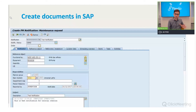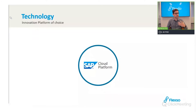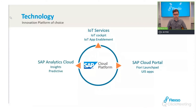We evaluated whether to build this ourselves or use SAP Cloud Platform, and SAP Cloud Platform won out. We use IoT services to create the digital twin, capture and store data in the cloud, and a Cloud Portal service to create a Fiori Launchpad with UI5 applications based on security and authorization rules. On top of that we can create a SAP Analytics Cloud dashboard providing the company insights into customer usage and even predictive analytics.